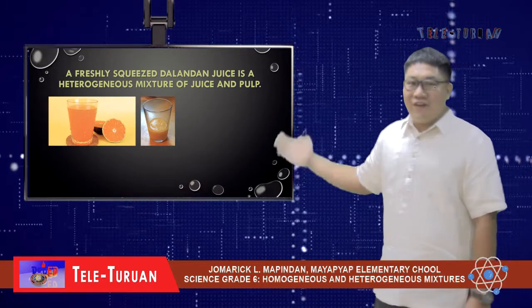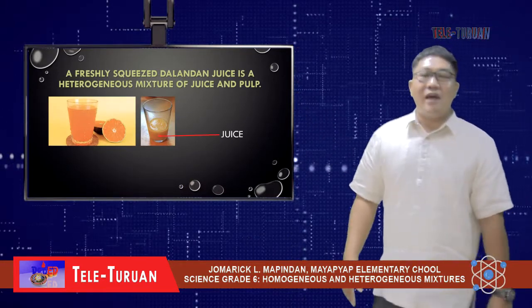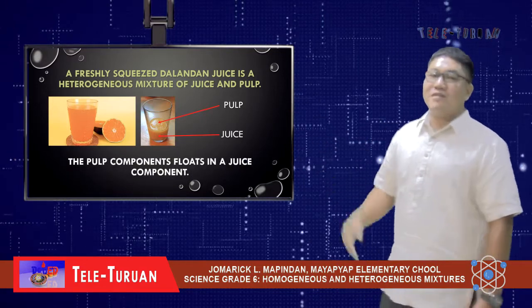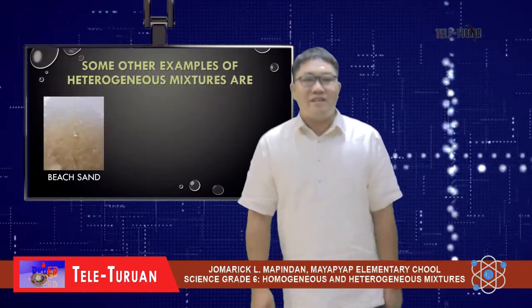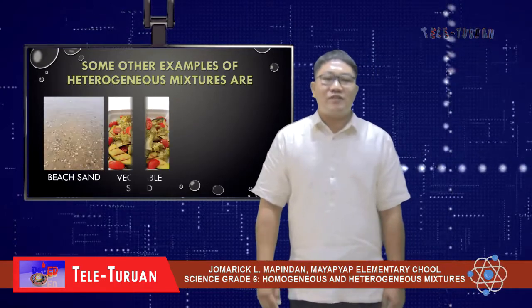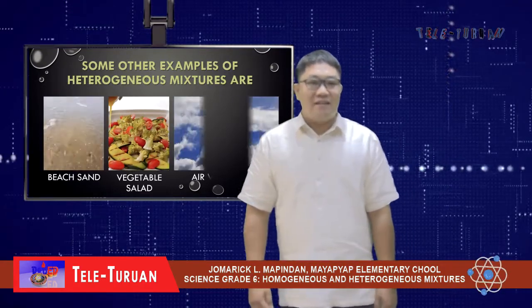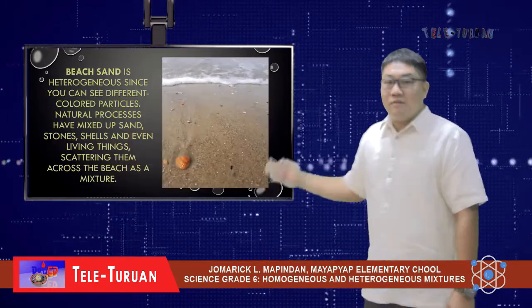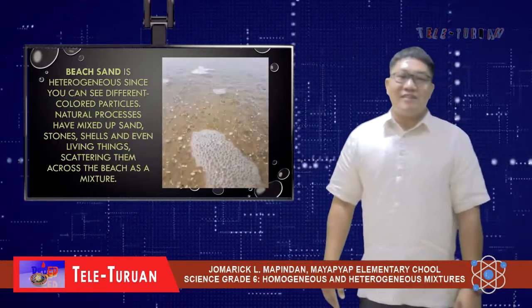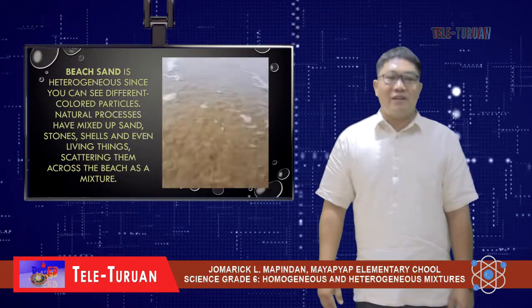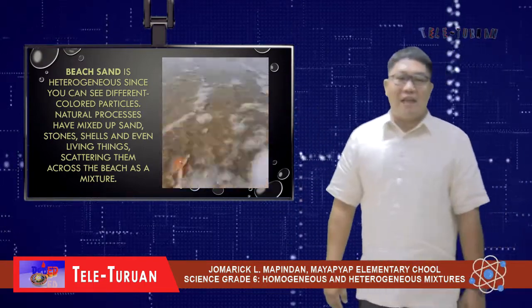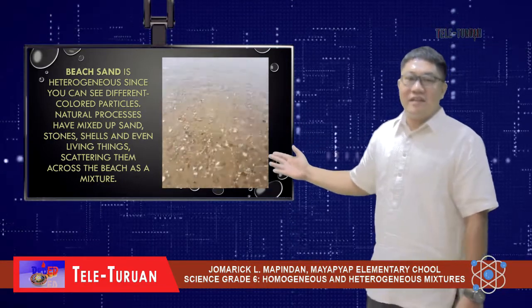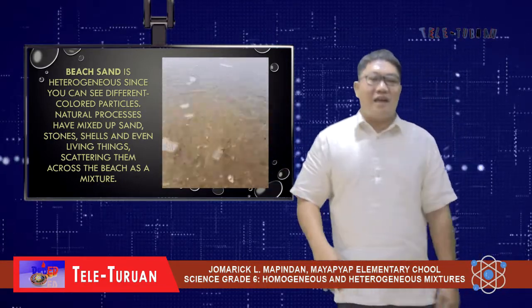For example, a freshly squeezed lemon juice is a heterogeneous mixture of juice and pulp. The pulp components float in the juice component. Some other examples of heterogeneous mixtures are beach sand, vegetable salad, and air with clouds. Beach sand is heterogeneous since you can see different colored particles. Natural processes mix up sand, stones, shells, and even living things, scattering them across the beach.